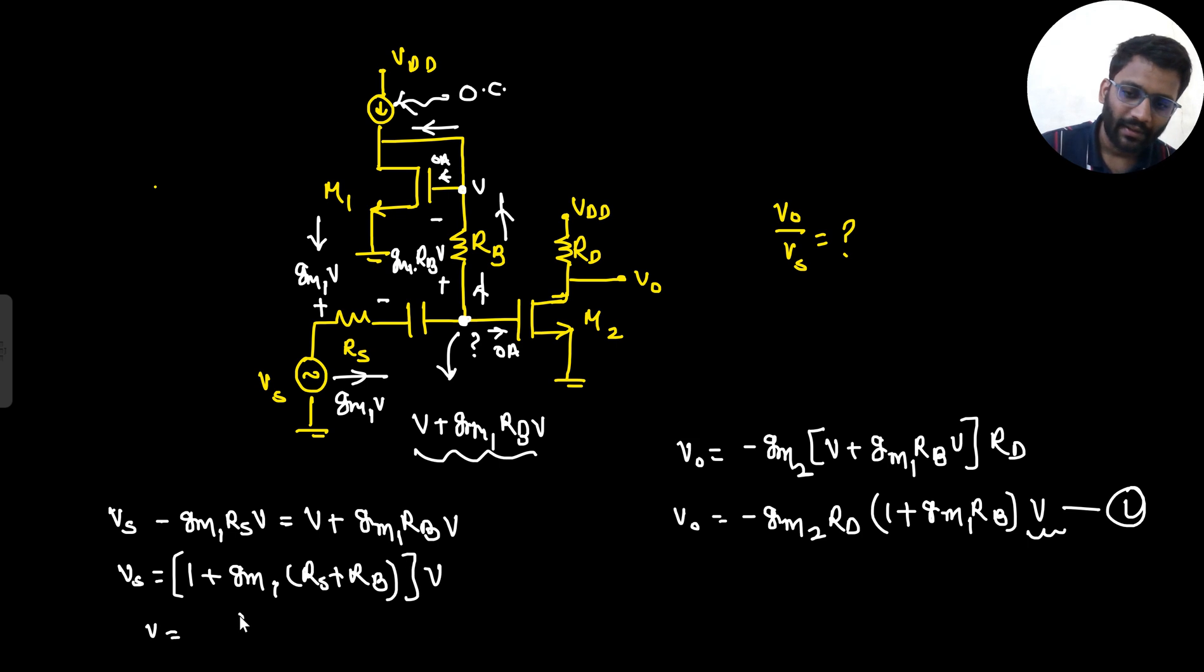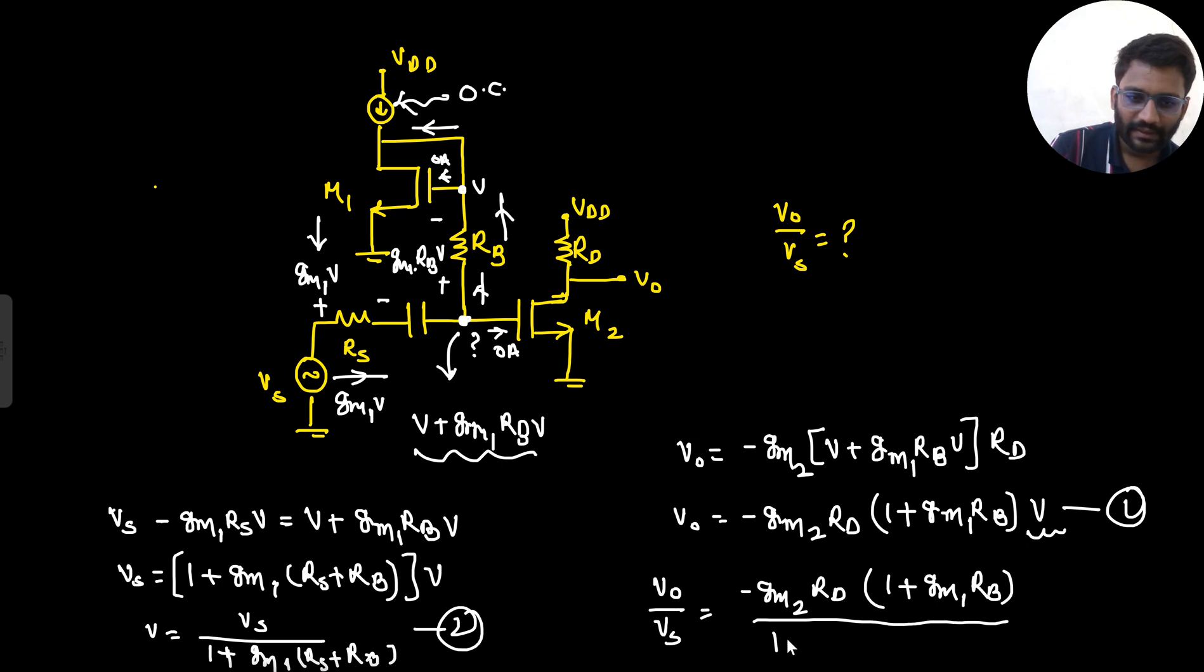So V value from here you can write Vs upon 1 plus gm1 Rs plus Rb. This would be your equation 2, and from equation 1 and equation 2 you can find the value of V naught by Vs, that would be minus gm2 Rd into 1 plus gm1 Rb upon 1 plus gm1 Rs plus Rb.